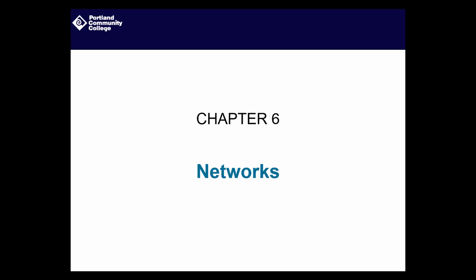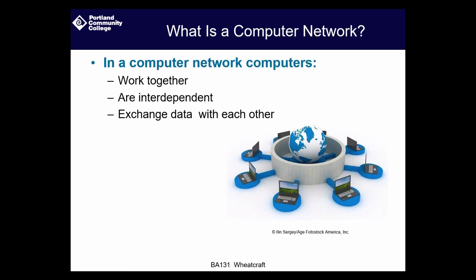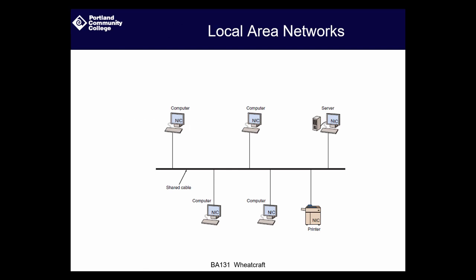So what exactly is a computer network? In its most basic form, it's just a bunch of computers that can work together — they're completely independent and they share information and data back and forth. A local area network, or LAN, is a network of computers that have some sort of backbone they're hooked to, allowing them to communicate with one another, a server, or a shared printer.